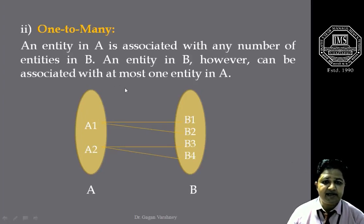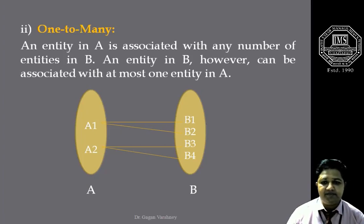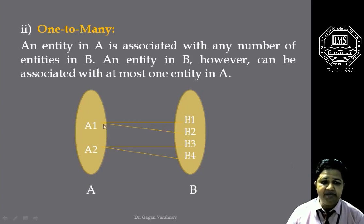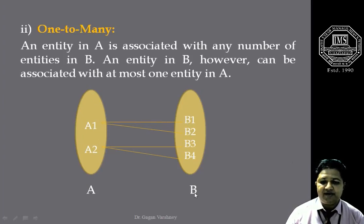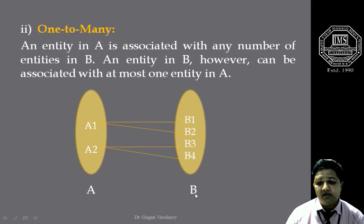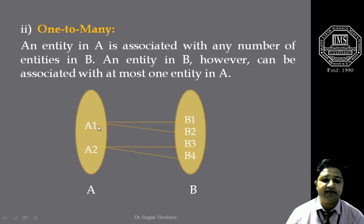In one-to-many mapping cardinalities, entity set A contains entities A1 and A2. A1 can be associated with two entities of entity set B, and A2 is also associated with two entities of entity set B. While from B to A, various entities of entity set B are associated with at most one entity in entity set A.